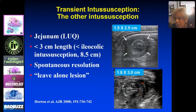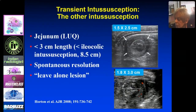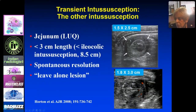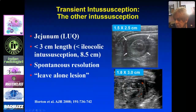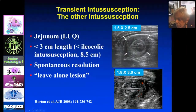The differential includes transient intussusception, which occurs in the left upper quadrant, is very short compared to standard intussusception, resolves spontaneously, and is a leave-alone lesion — don't treat it, it's going to go away. In patients with pain, we look at the right lower quadrant but also the entire abdomen. If we don't find something in the right lower quadrant, a target appearance in the left upper quadrant is a transient intussusception — small, and we leave it alone.